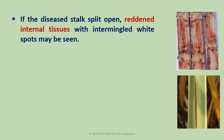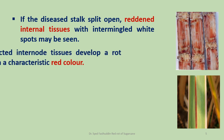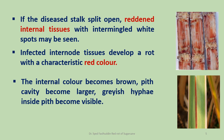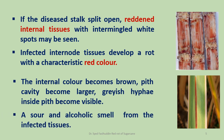Cane tissue changes in color and a gummy dark red material oozes out of the cells, filling the intercellular spaces. If the diseased stalk is split open, red-colored internal tissue with intermingled white spots may be seen. Infected internal tissues develop a characteristic red color that often contains interspersed areas of normal color known as white spots. The internal color becomes brown, the pith cavity becomes larger, and grayish hyphae inside the pith become visible. A sour and alcoholic smell emanates from the infected tissue.